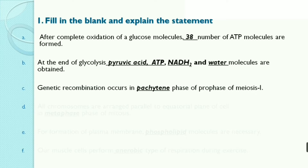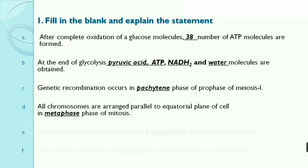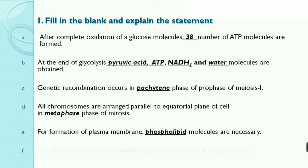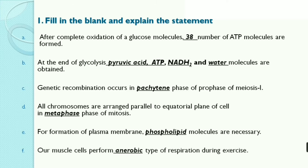Genetic recombination occurs in the pachytene phase of prophase of meiosis 1. All chromosomes are arranged parallel to the equatorial plane of the cell in the metaphase phase of mitosis. For formation of plasma membrane, phospholipid molecules are necessary. Our muscle cells perform anaerobic type of respiration during exercise.